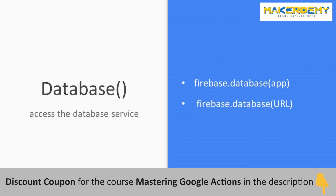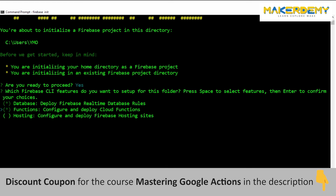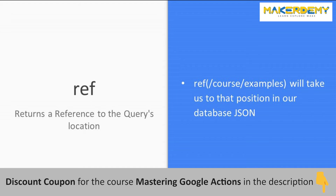Database function. The database function can be called with no arguments to access the default app's database service. You can also access it using a URL to obtain the data service of the app based on the database's URL. Since we will be using our application's associated Firebase database, we will leave it empty. If you are going to access some external database, then the corresponding hosted URL must be given here.